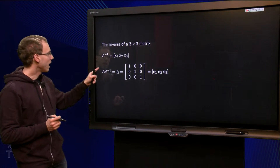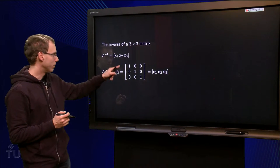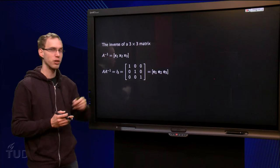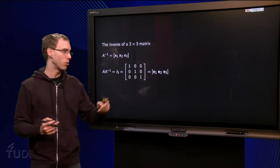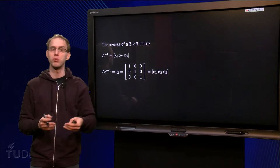Now I know that A times A inverse is the identity matrix, 1, 0, 0, 0, 1, 0, 0, 0, 1. Or the matrix with columns e1, e2 and e3, because e1 equals 1, 0, 0, etc.